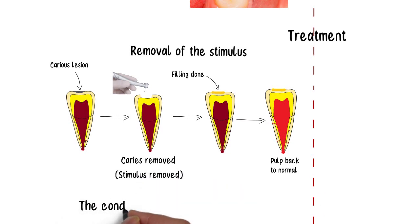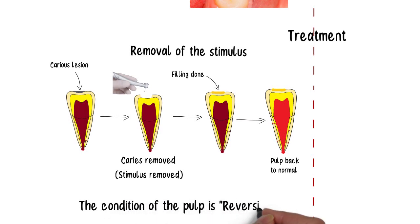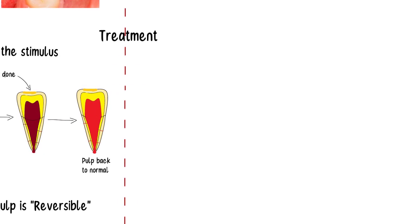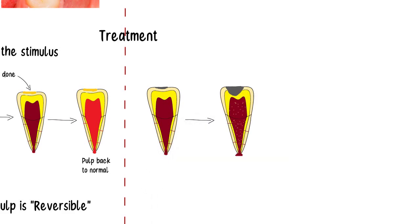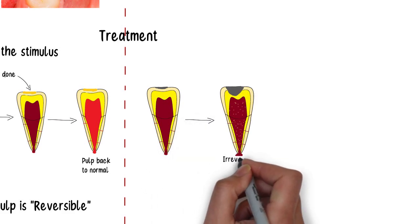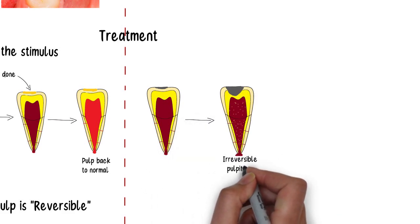It is known as reversible because the condition of the tooth is reversed back to normal once the stimulus is removed. However, if the irritation to the pulp is left unchecked, the pulp can easily progress towards moderate to severe inflammation, causing irreversible pulpitis.